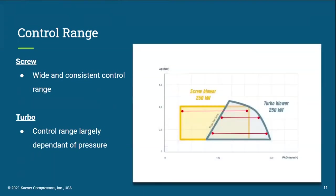Now let's look at control range, focusing on screw and turbo blowers. The screw blower control range is shown in yellow and the turbo blower in blue. For the turbo blower, two red lines are drawn from the surge line on the left to the maximum flow limit on the right at two different operating pressures. As you can see, operating pressure has a large influence on how much flow the turbo blower can deliver — as you increase pressure, your flow range gets much smaller. With the screw blower, you can change the operating pressure and the flow range remains largely unaffected. In conclusion, if pressure is fairly consistent, a turbo blower can be a great choice; however, if pressure has large fluctuations, a screw or lobe blower might be better.